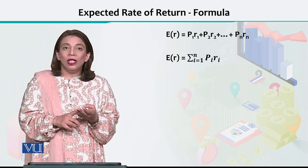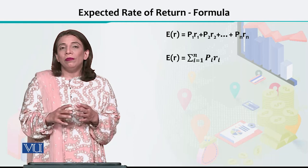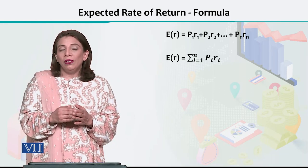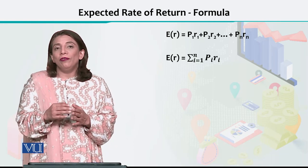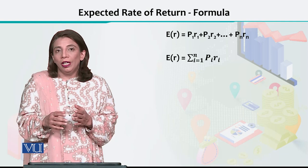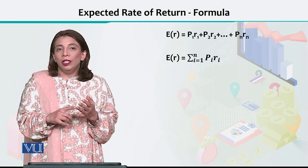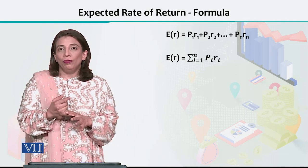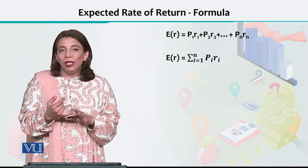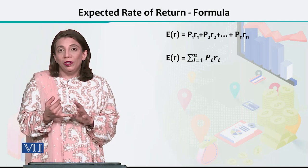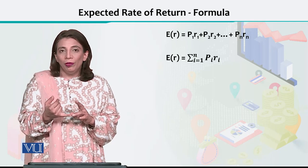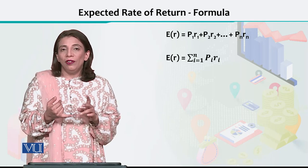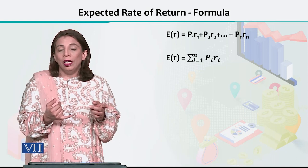Suppose we are doing 6 months of analysis. We have monthly values of rate of return: in January, February, March, April, May, and June — these 6 months. We have received returns and named them R1, R2, R3, R4, R5, and R6.